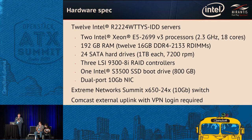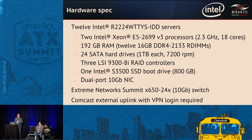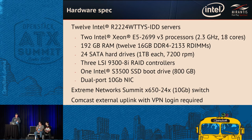To connect everything together, we used an Extreme Networks Summit X650 switch, with a Comcast external uplink on an isolated network. This preserved security so that no one else could access the systems, and the Mirantis folks also couldn't get into the rest of the Intel internal network. With that, I'll turn the time over to Nikita to talk about their experiments and results.